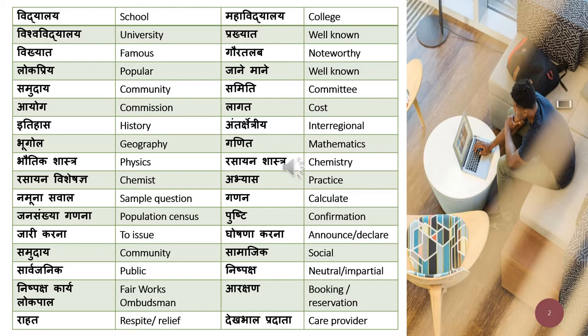Prakyat means 'well known' and vikyat means 'famous.' There is a small difference between the two — they can be used interchangeably, but the best-suited option is: use 'prakyat' when you want to say 'well known,' and 'vikyat' when you want to say 'famous.' Gaur talab means 'noteworthy' or 'significant.' For example: 'It is noteworthy that Sydney is a very big city.'